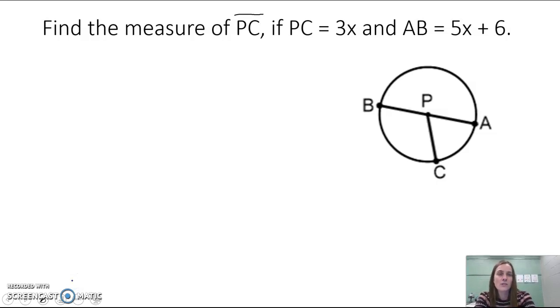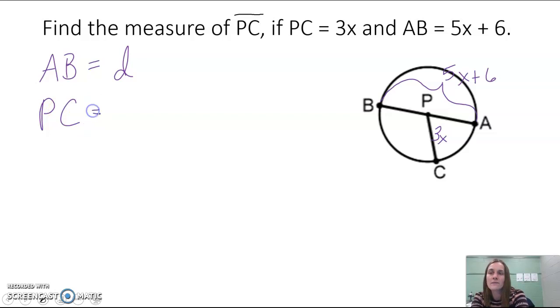PC is equal to 3x, so I'm going to put 3x there, and then AB, this whole thing, is equal to 5x plus 6. But what we notice here is that AB is a diameter, and PC is a radius of our circle.